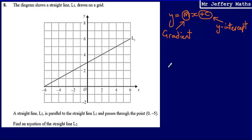What we first need to recognise is that if two straight lines are parallel, they will both have the same gradient. If they have the same steepness, that means they will never meet.